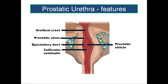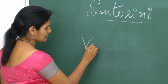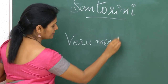At the center of the urethral crest you find an enlarged rounded elevation called the colliculus seminalis, also known as the verumontanum.